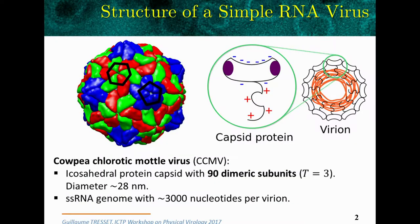Let me first present the viral system that I use. This is the CCMV, which is a plant virus with a capsid T equals 3, comprising 90 dimers, which I will call subunits. The diameter is about 28 nanometers.